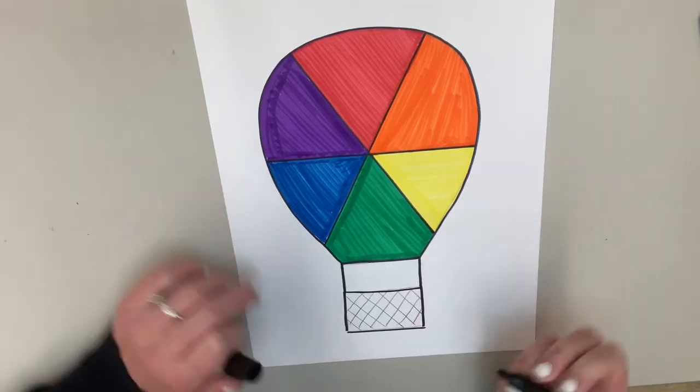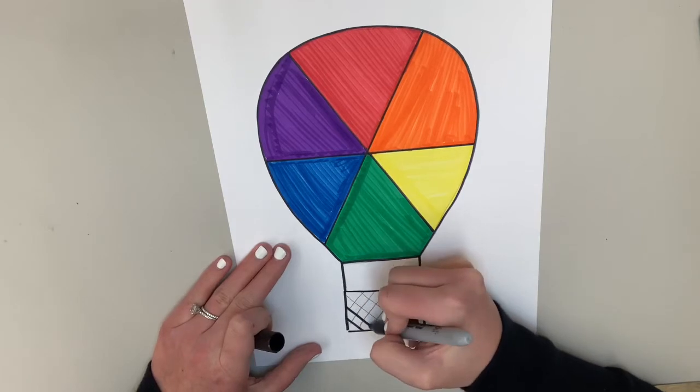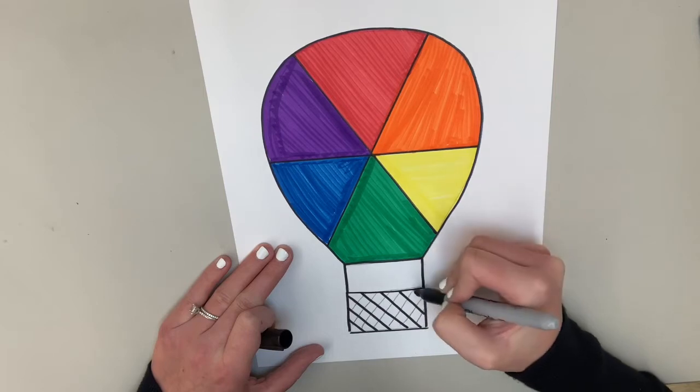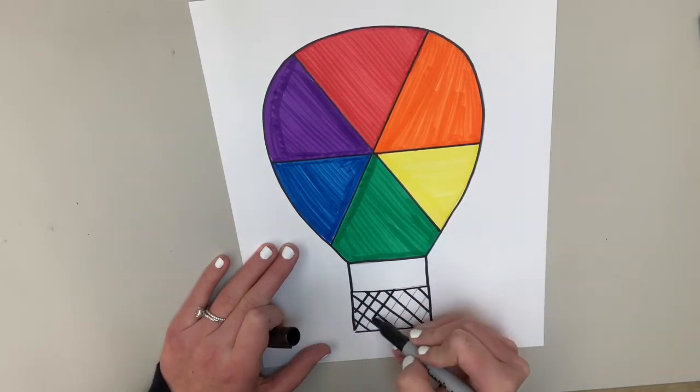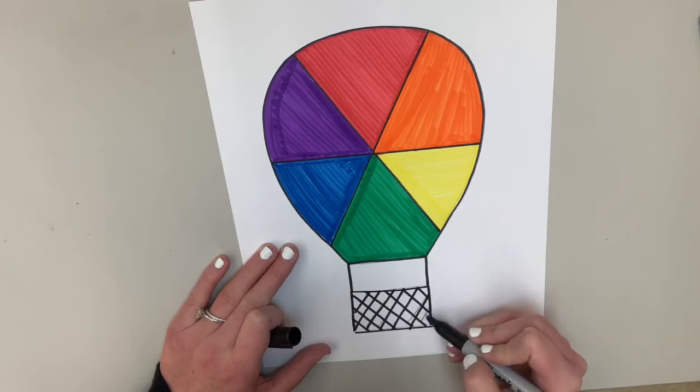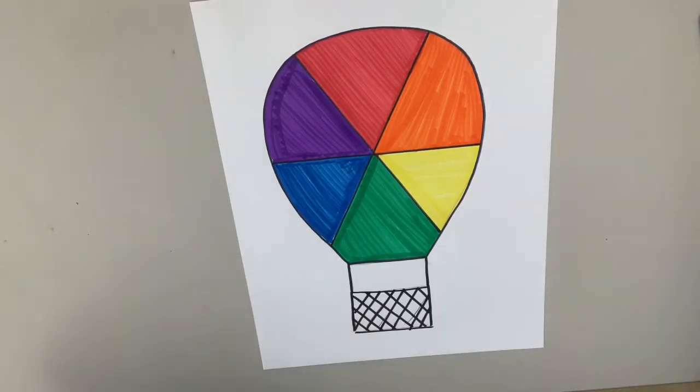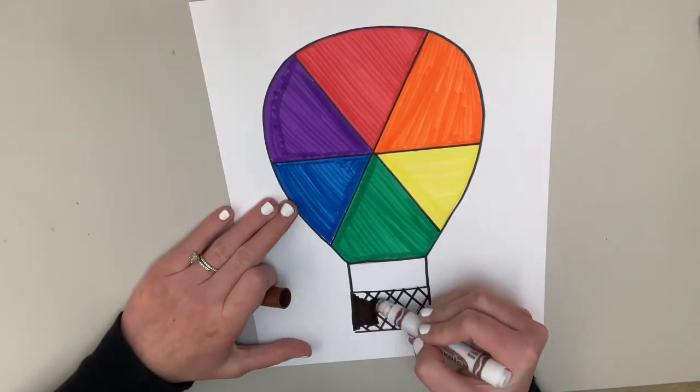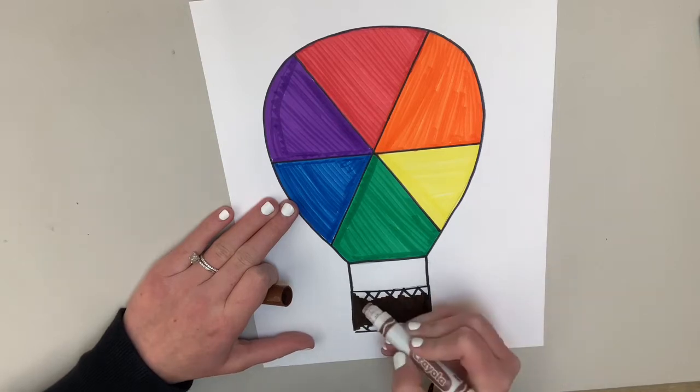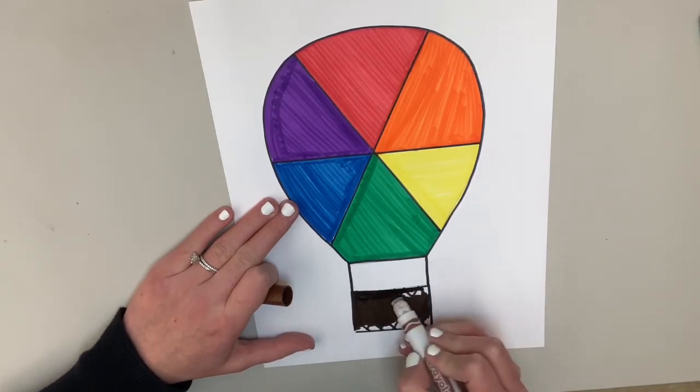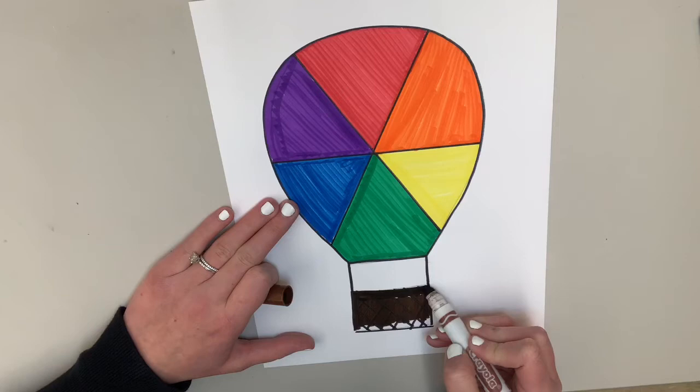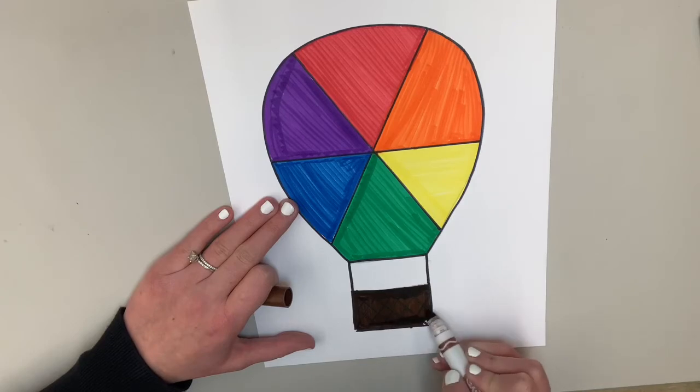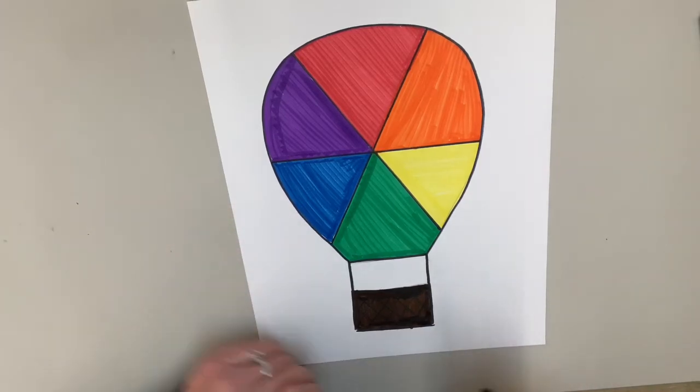And maybe you want to put someone inside your basket. That might be a fun detail to add. But you can kind of start to add whatever you'd like here. So I might add a person in my basket and then I'm going to start adding a sky. So think about what you want to be in your sky. Do you want it to be a blue sky day? Do you want it to be a sunset over mountains? Do you want it to be over a beach maybe? Kind of whatever you decide where you want your hot air balloon to be. I think I'm going to draw kind of myself in here.